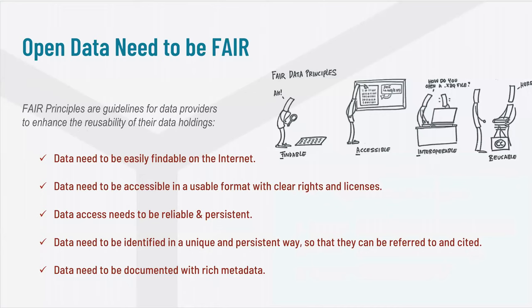Open has clearly not been enough. If data are openly accessible, it doesn't mean we can easily find them, access them, or that they are reusable. This has led to the FAIR principles — FAIR is the acronym for Findable, Accessible, Interoperable, and Reusable. Data should be documented properly with information that makes them findable, with structure such that internet search engines can find them, with clear licenses, identified in a unique and persistent way so they can be cited, and with enough documentation about uncertainties, methods, and data manipulation methodologies.